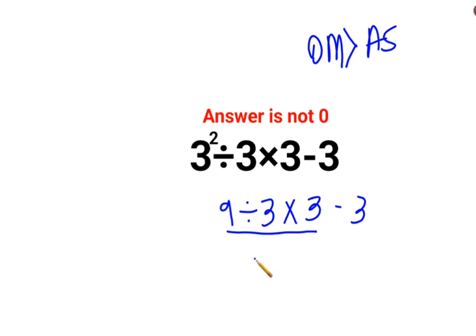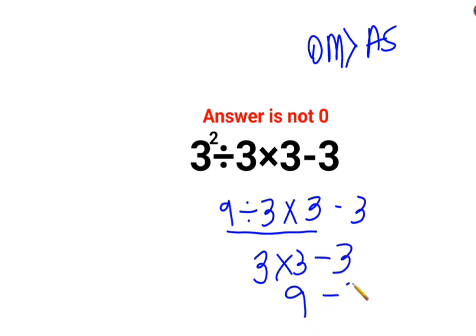So 9 divided by 3 is 3, multiplied by 3 minus 3. So 3 multiplied by 3 is again 9, minus 3. The answer for this question is supposed to be 6. I hope this is very clear to everyone.